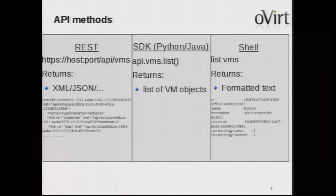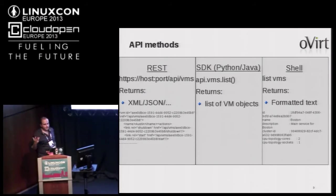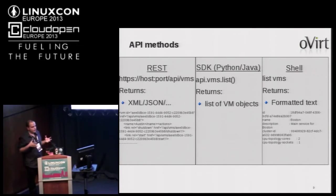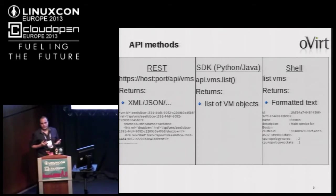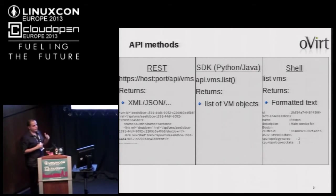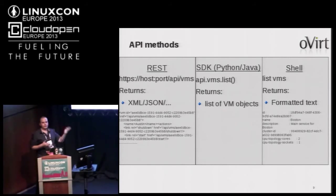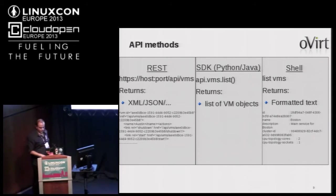We expose three ways to use the API. One is using the REST API itself. The second is using an SDK. And the third is using a shell. The SDK is based on the REST API, and the shell is based on the Python SDK. So basically you have three ways to use the API.